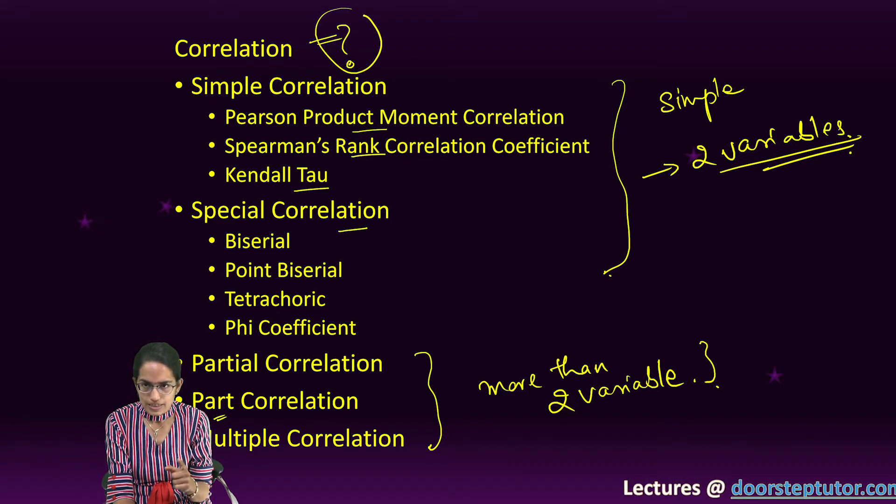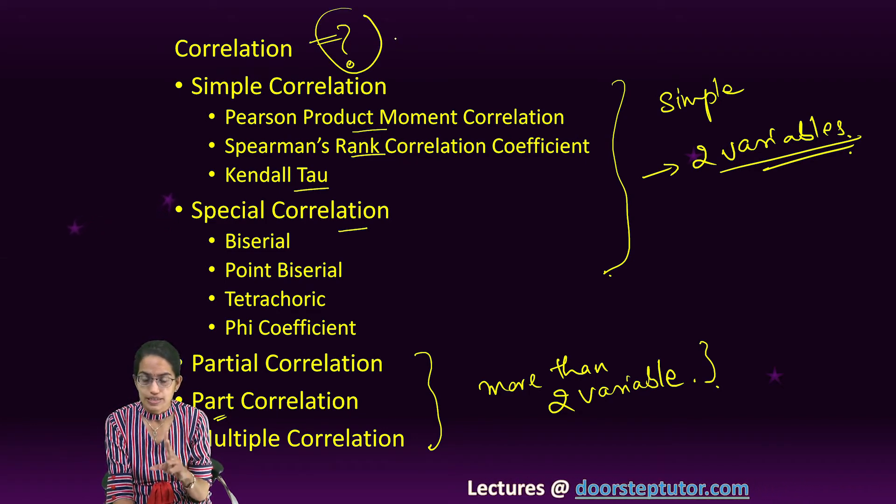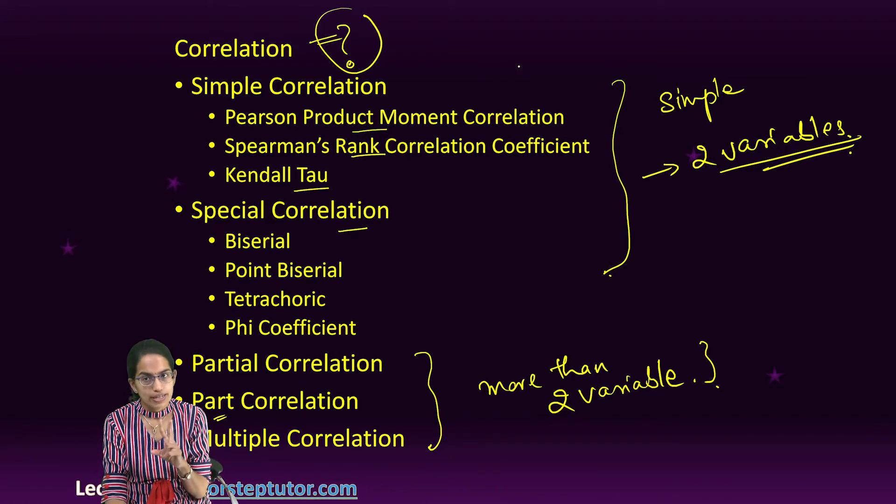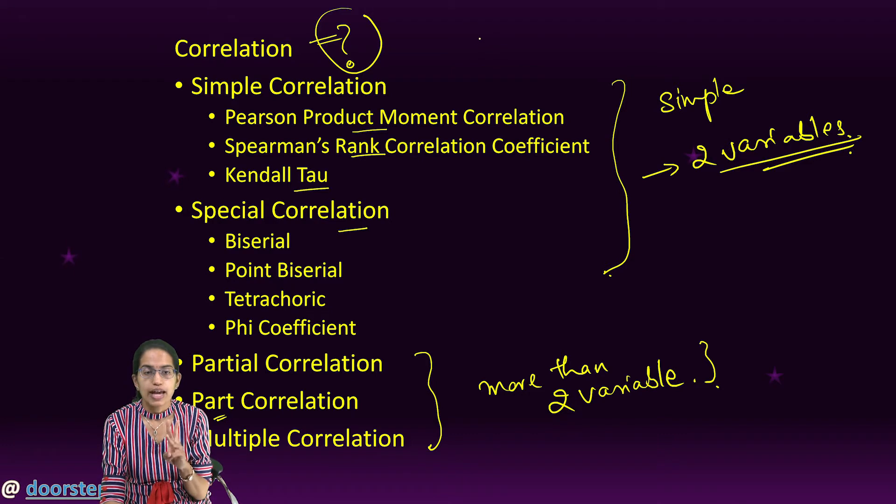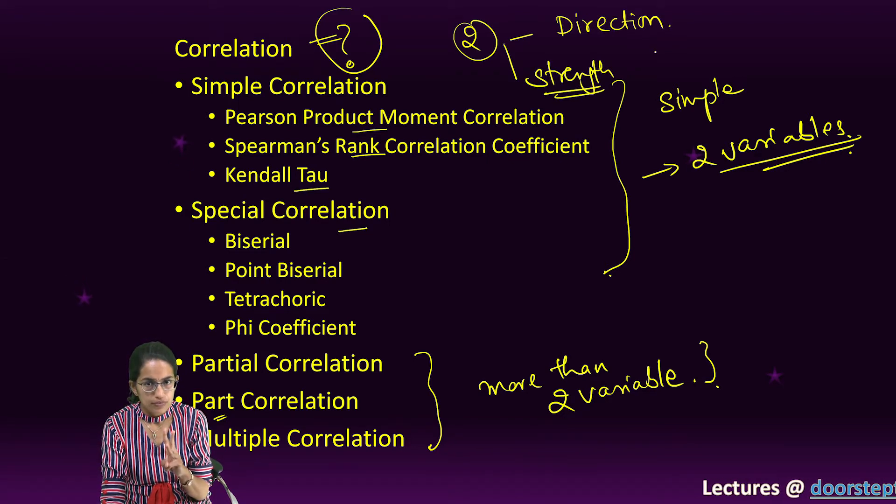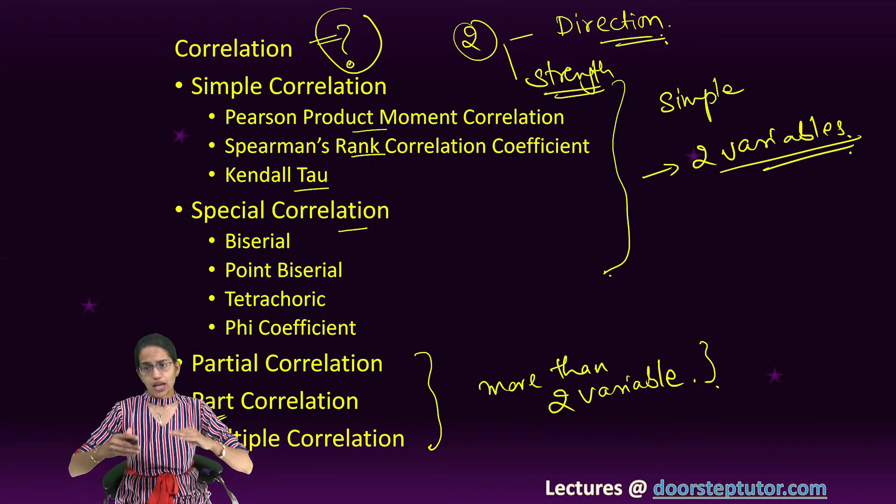Correlation means you are trying to understand the relation between two variables. Now understand carefully, there can be two dimensions on which you understand this relation. The first is the direction, the second is the strength.